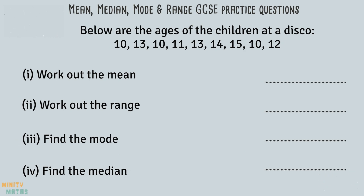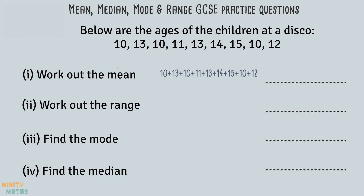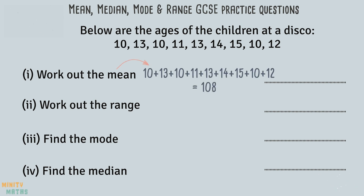We are given the ages of a group of children and asked to find the mean, median, mode and range of these ages. To find the mean we add up all of the ages and divide by the number of children. We have 9 different ages here so there are 9 children. If we divide 108 by 9 we get a mean age of 12.